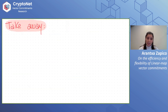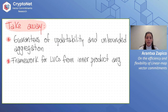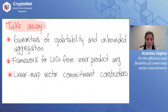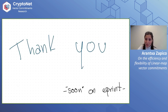Taking-away details: we give guarantees for updatability and unbounded aggregation starting from homomorphic proofs and commitments. We provide a framework for constructing linear map vector commitments from inner product arguments, with two concrete constructions. We achieve constant verifier for subset challenges, aggregation proofs, and multi-openings. Thank you very much — I hope to see you on ePrint.